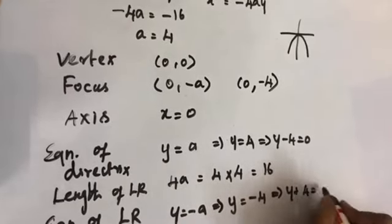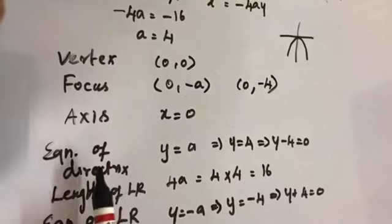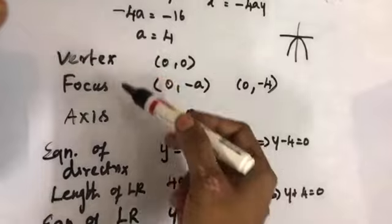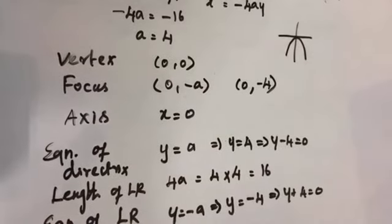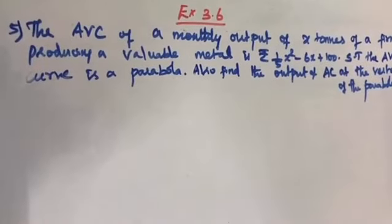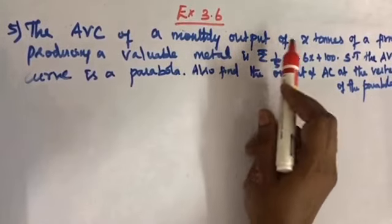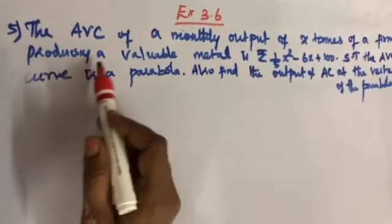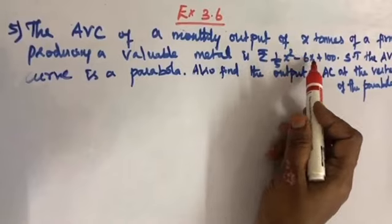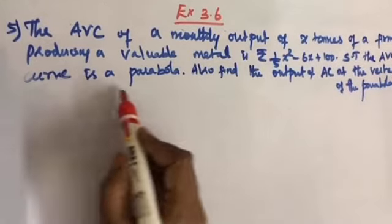Fifth problem: The average variable cost of a monthly output of x tons of a firm producing a valuable metal is (1/5)x² − 6x + 100. Show that the average variable cost curve is a parabola. Also find the output and average cost at the vertex of the parabola.